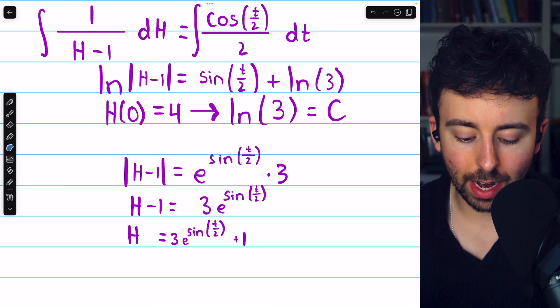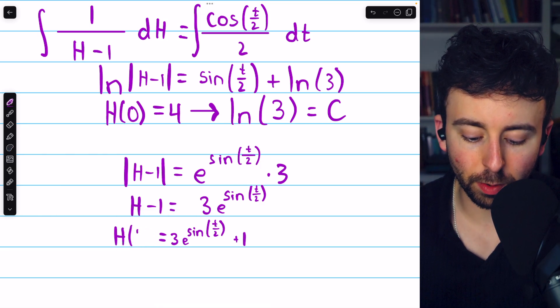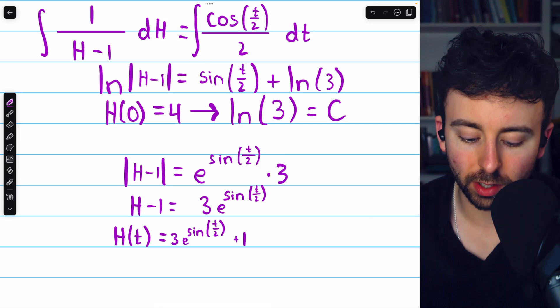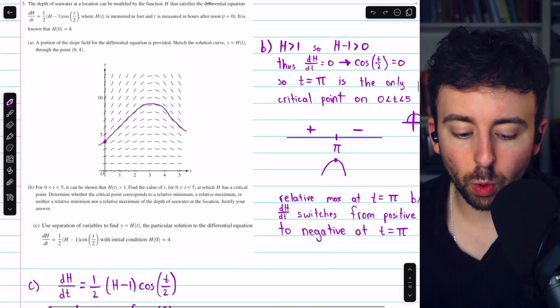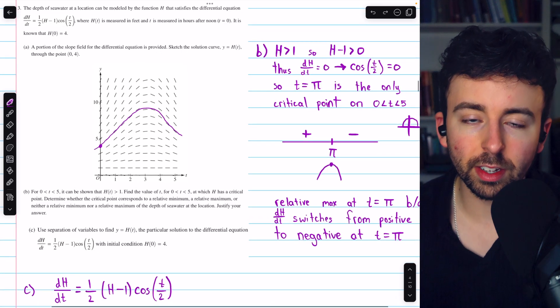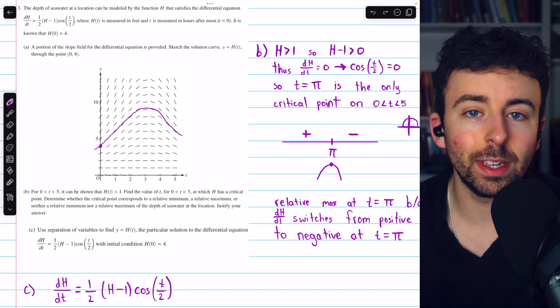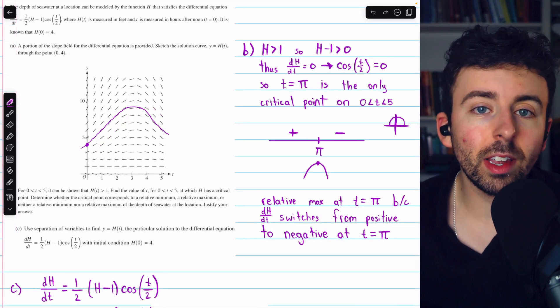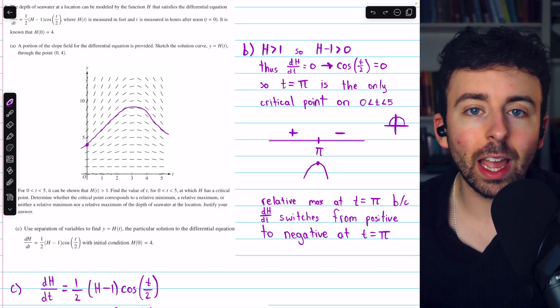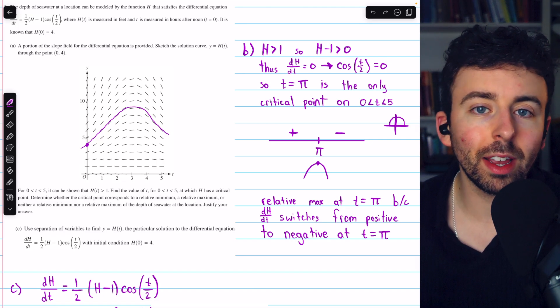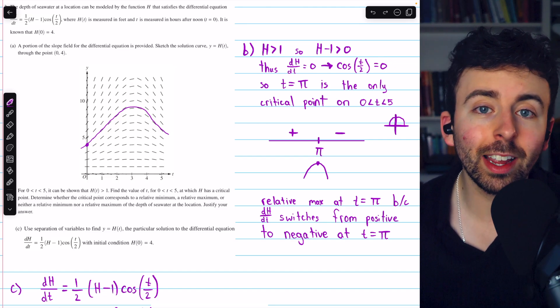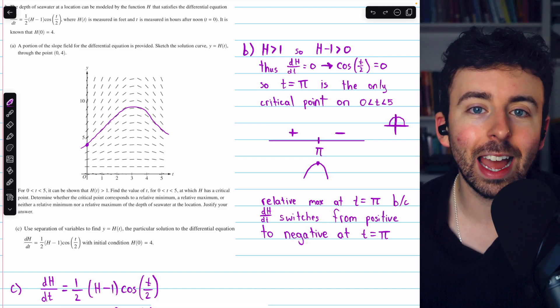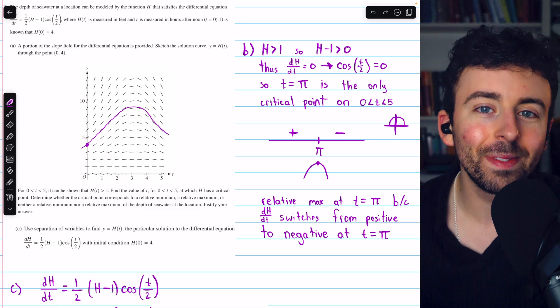And, if we want to go ahead and emphasize that this is a function satisfying this differential equation, we can write h(t) equals this. And that completes our solution to free response question three from the 2024 AP Calc AB/BC exam. Let me know in the comments if you have any questions and be sure to check out my Calculus 1 course and Calculus 1 exercises playlists in the description for more. If you want a little bit more practice, check out my 10 hours of AP Calc FRQs in the description as well. Thanks for watching.